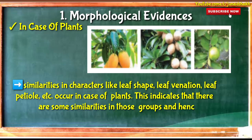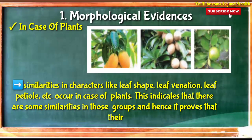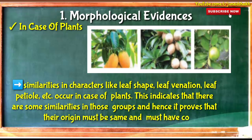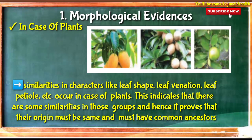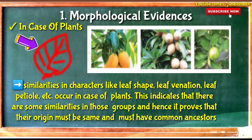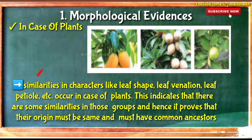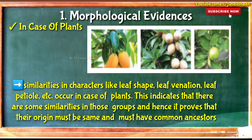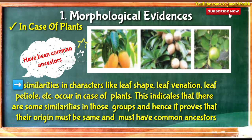जो भी उनका leaf venation है — leaf venation means the arrangement of veins in the leaf. और जो leaf petiole है — leaf petiole means जो stalk होती है, वो leaf blade से attached होती है, इसी को leaf petiole कहते हैं। इनमें जो भी similarities नजर आ रही हैं, यह इस बात का proof है कि इनका भी एक common ancestor हो सकता है और ये same ancestor से originate हुए हैं।